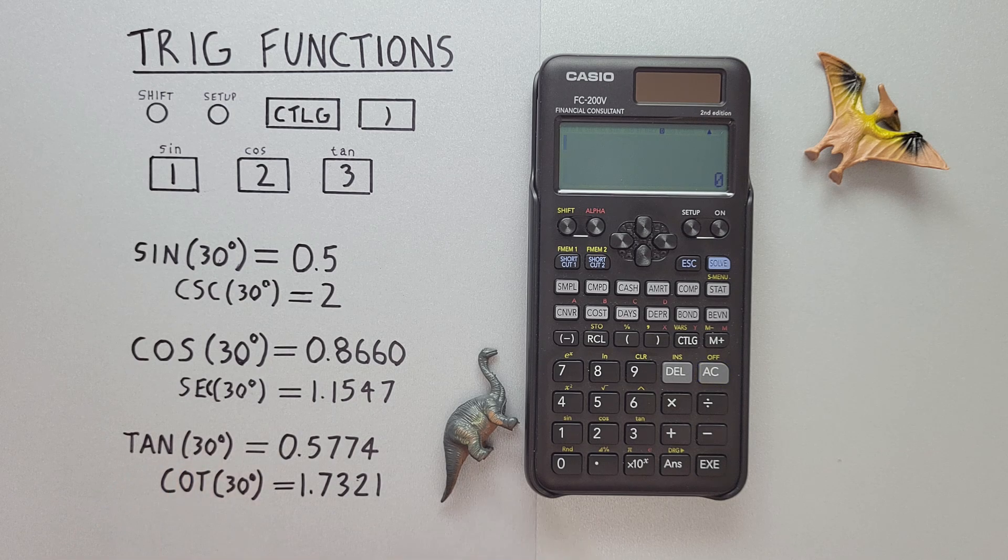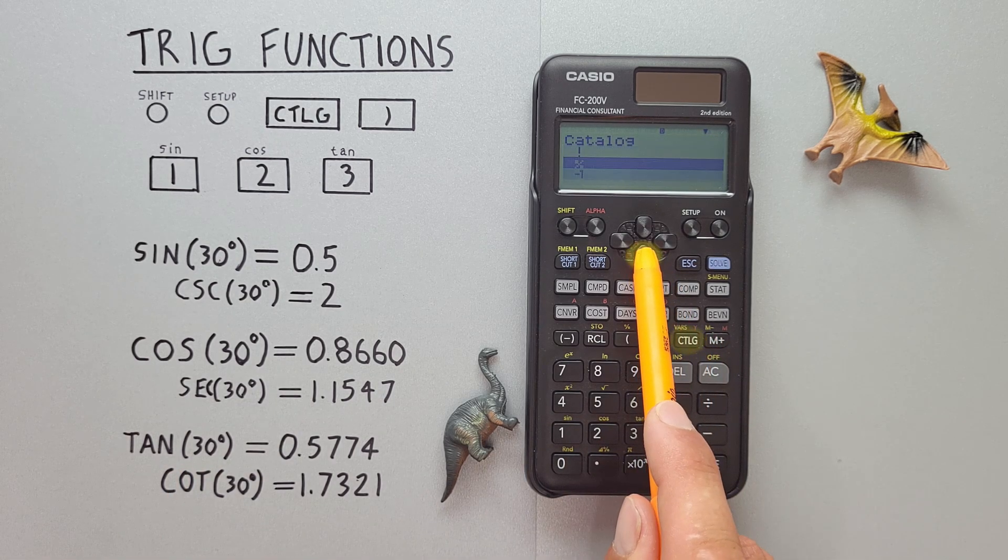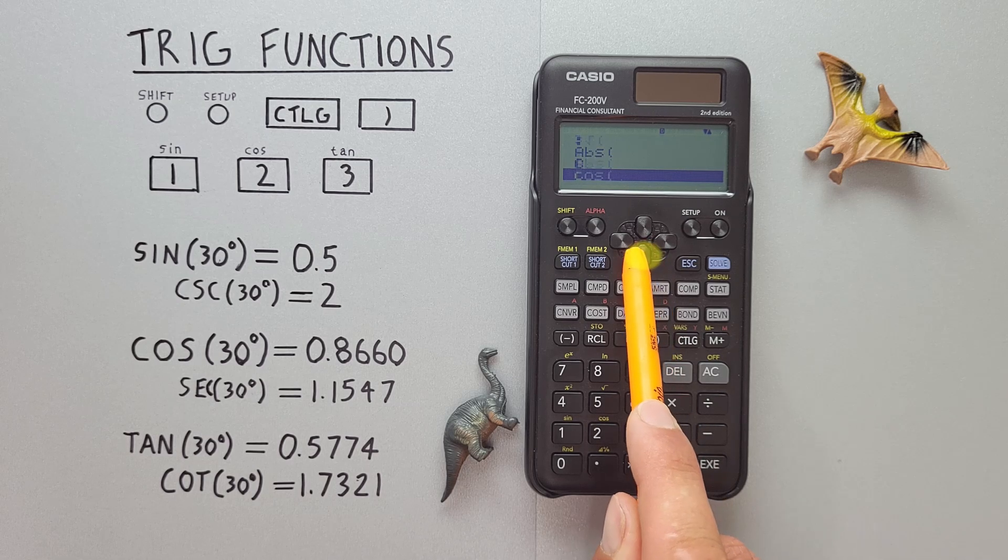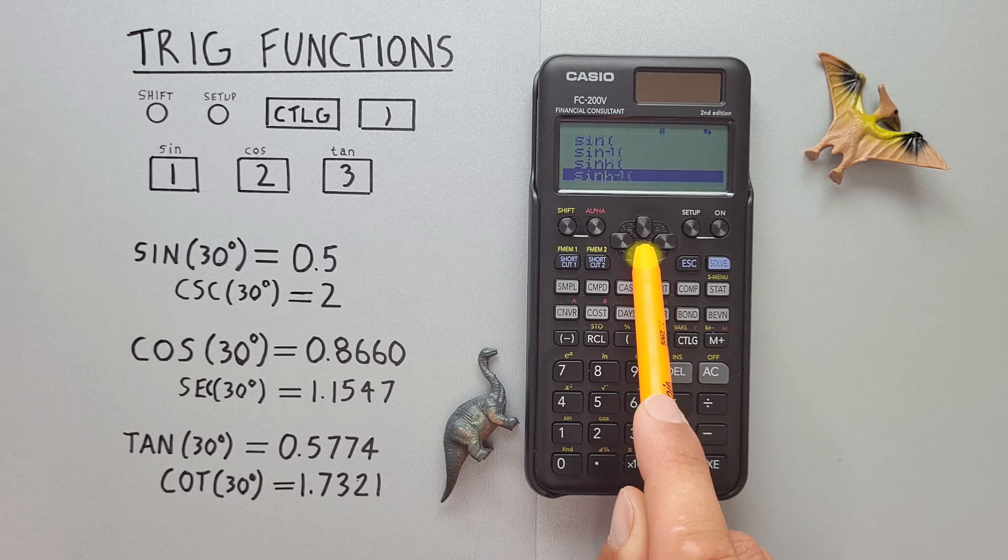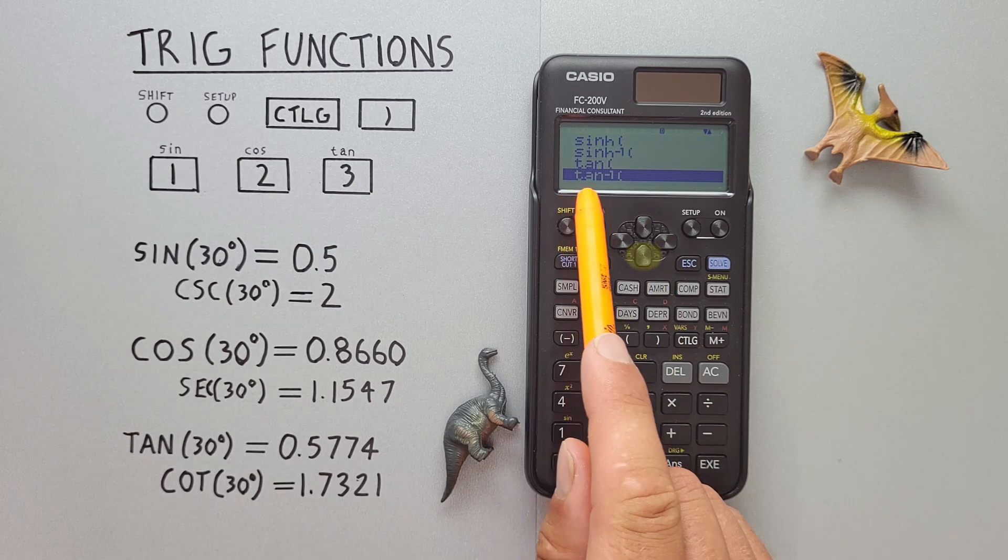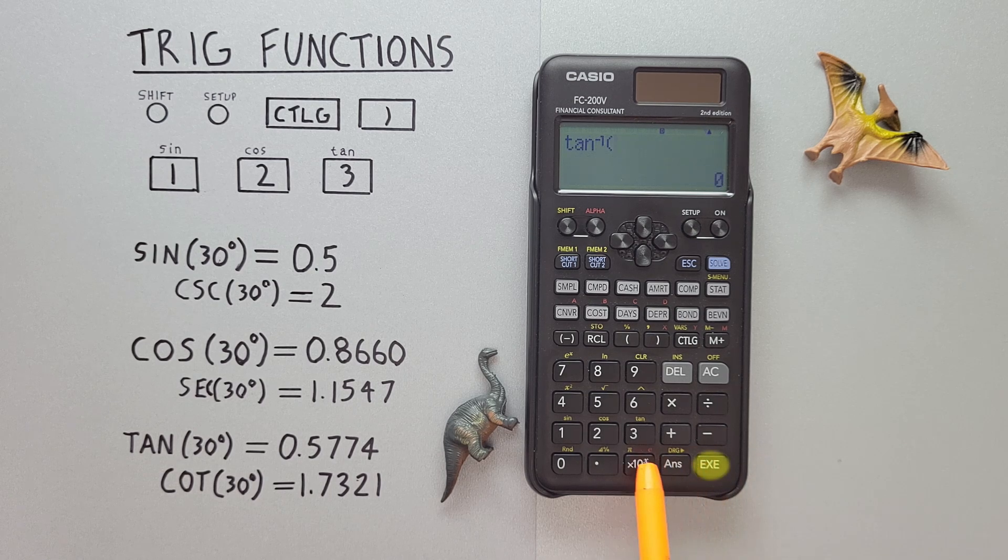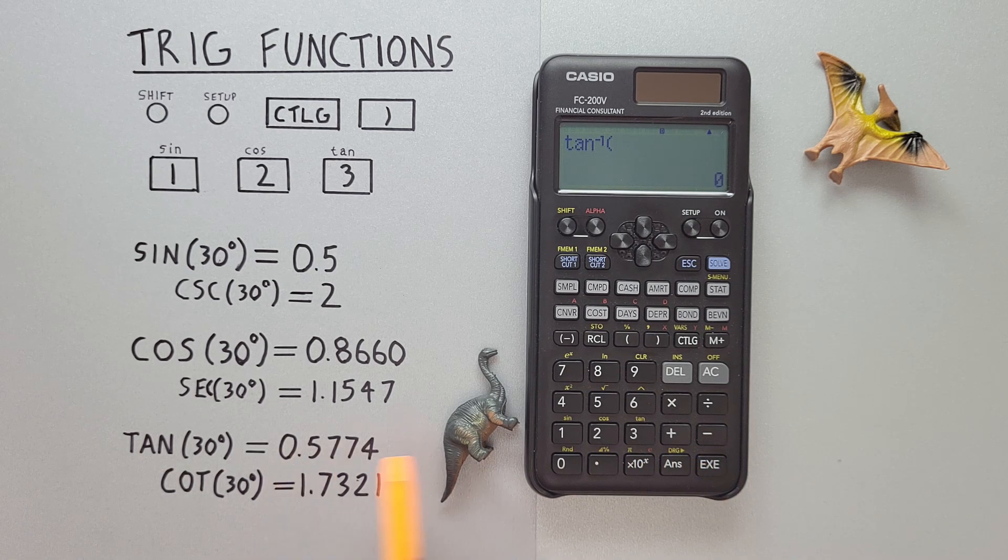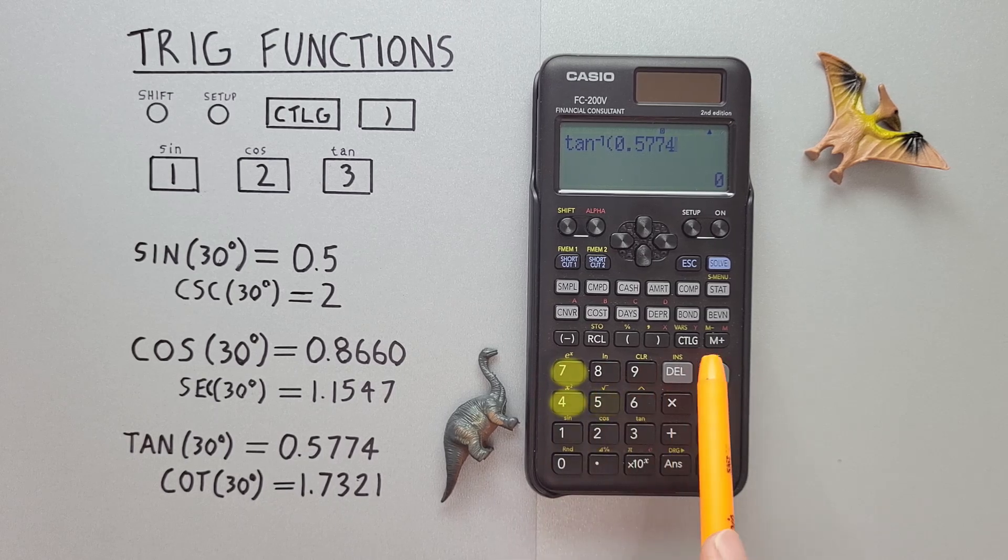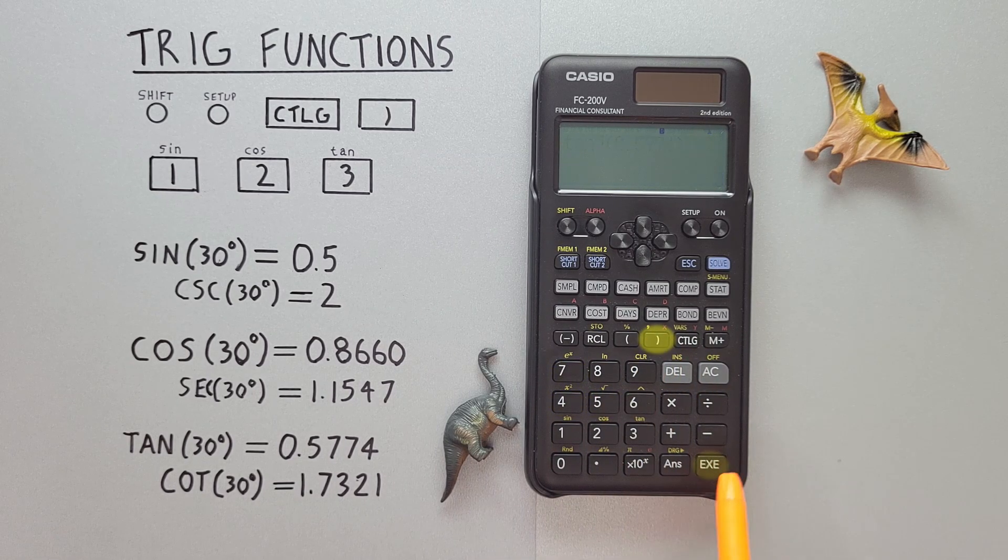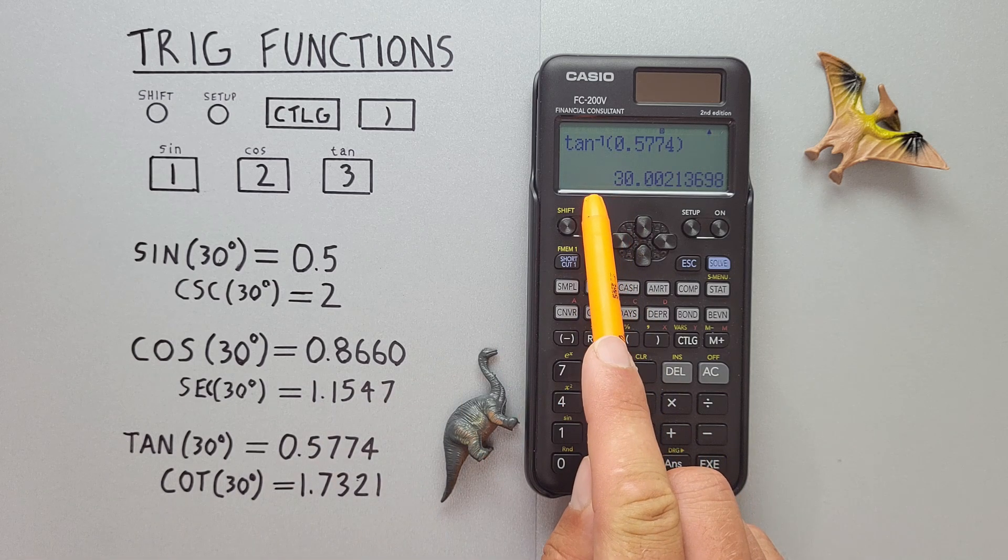For arc tan, again, we go to our catalog key, scroll down until we see tan minus 1, select it. Enter our 0.5774, close our bracket, and hit exe. And again, get what would round to 30 degrees.